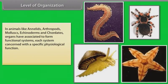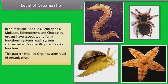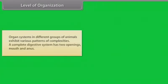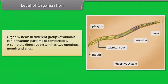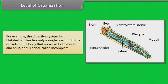In animals like annelids, arthropods, mollusks, echinoderms and chordates, organs have associated to form functional systems; each system is concerned with a specific physiological function — this pattern is called organ system level of organization. A complete digestive system has two openings: mouth and anus. The digestive system in Platyhelminthes has only a single opening to the outside that serves as both mouth and anus, and is hence called incomplete.